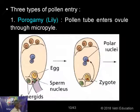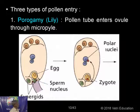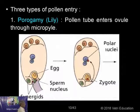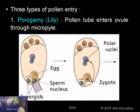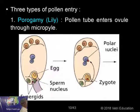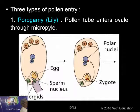See how fertilization is taking place. These are the antipodals, this is the synergid, this is the egg, and these are the male nuclei. They bring about fertilization. One male nucleus fuses with the egg — this has now become the zygote. Another male nucleus fuses with the polar nuclei — the secondary nucleus.